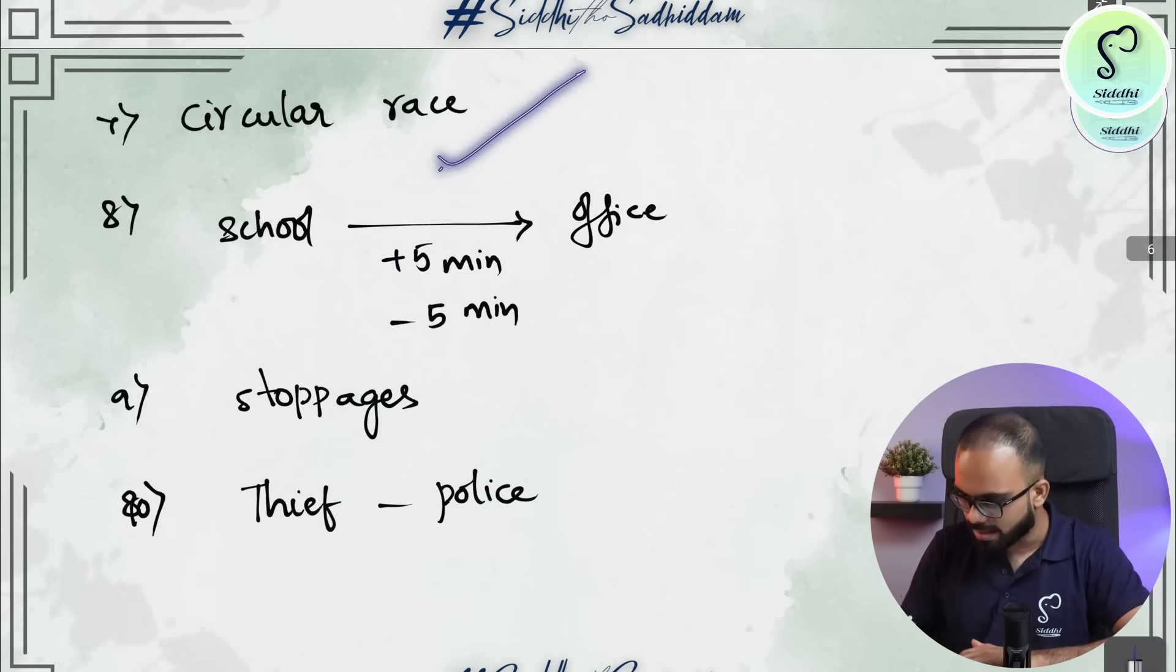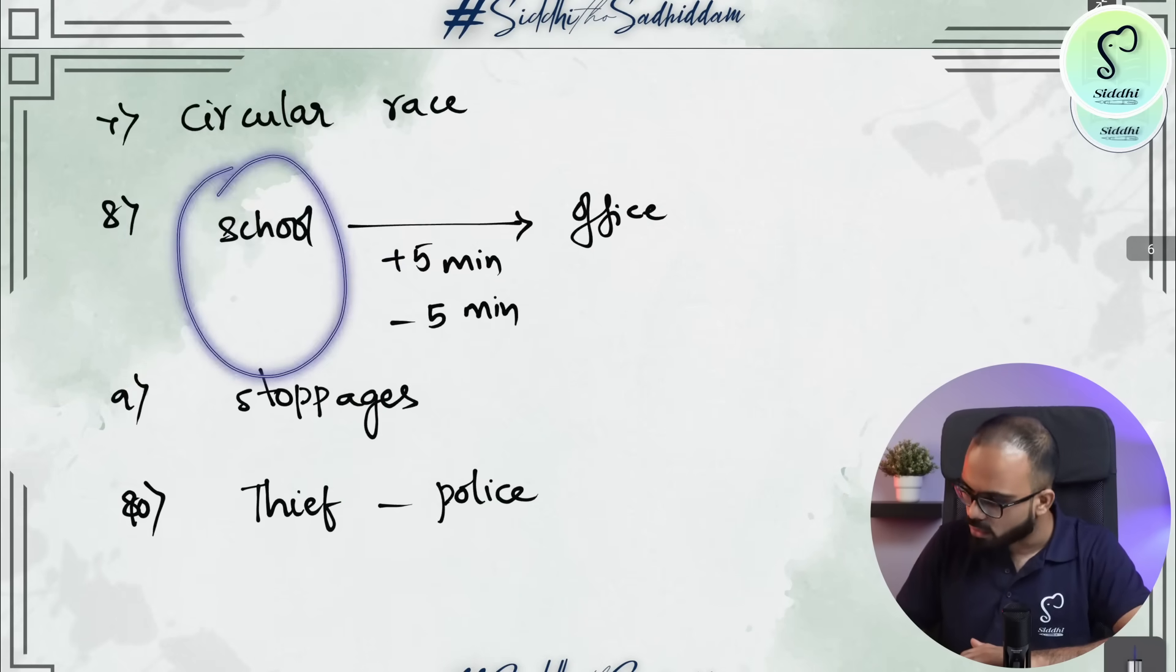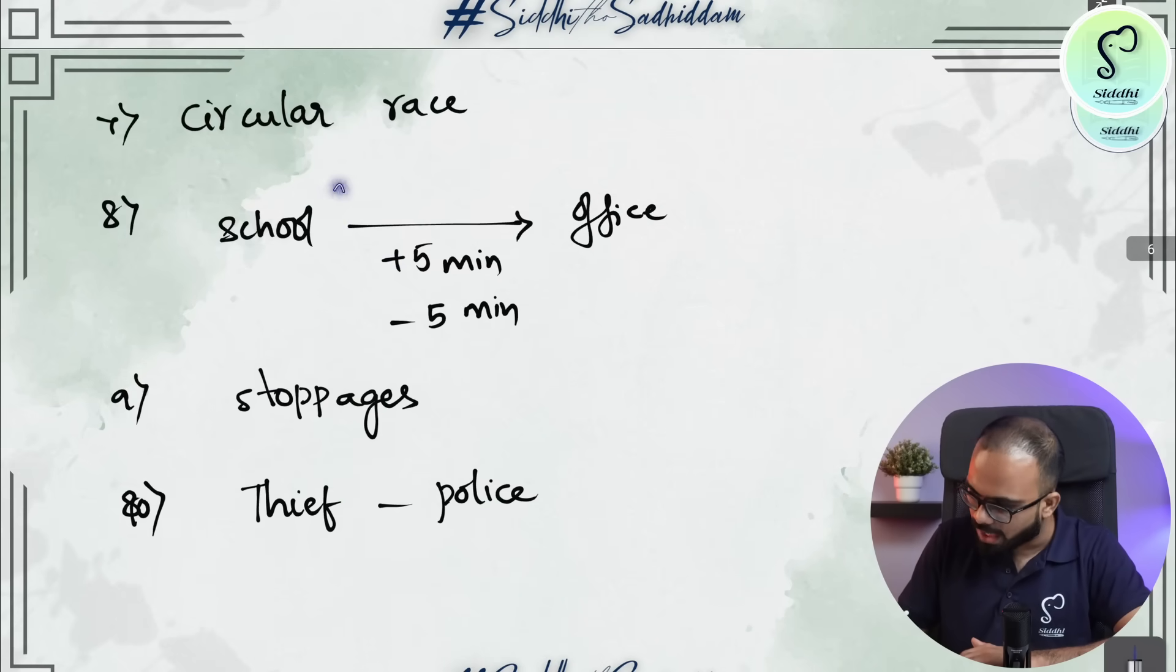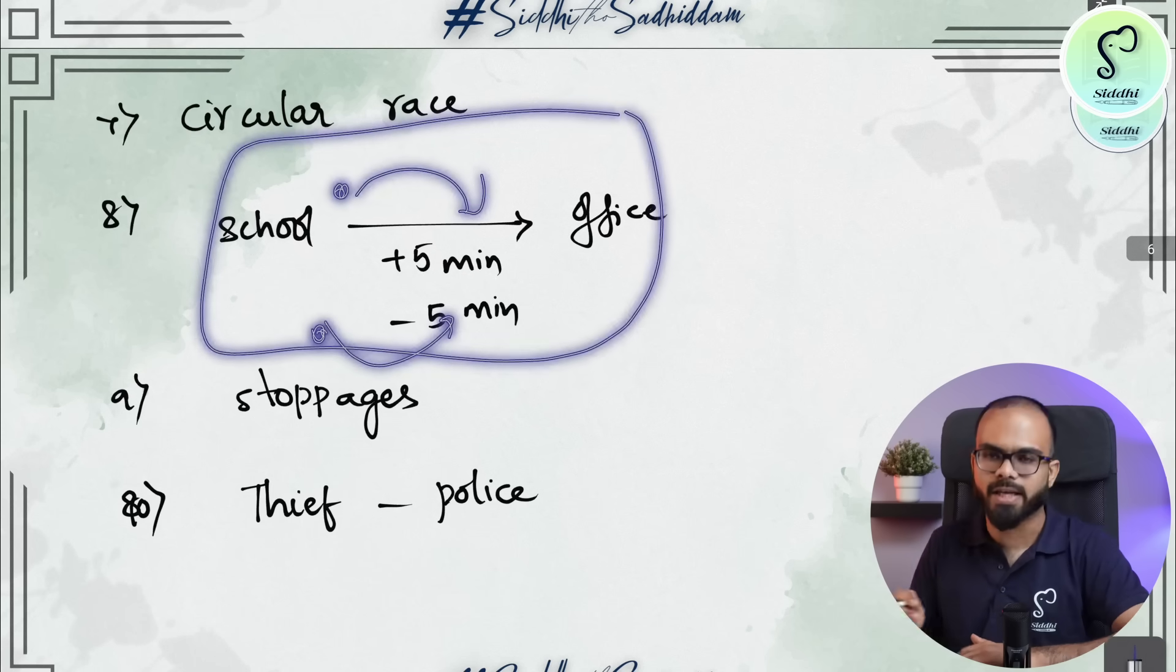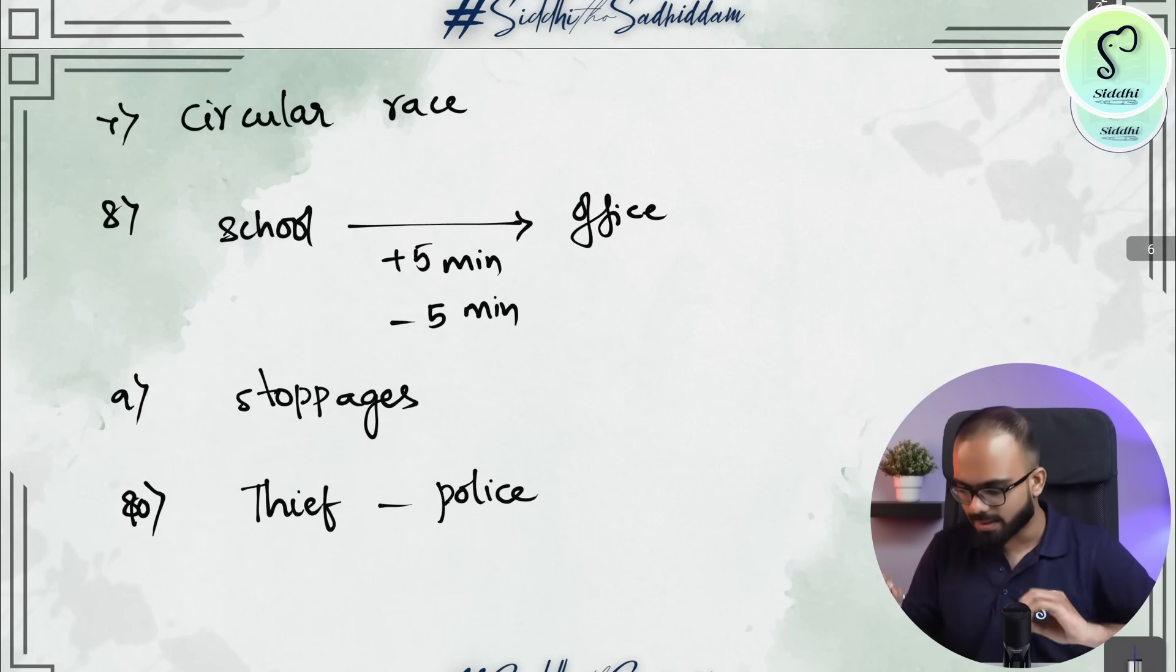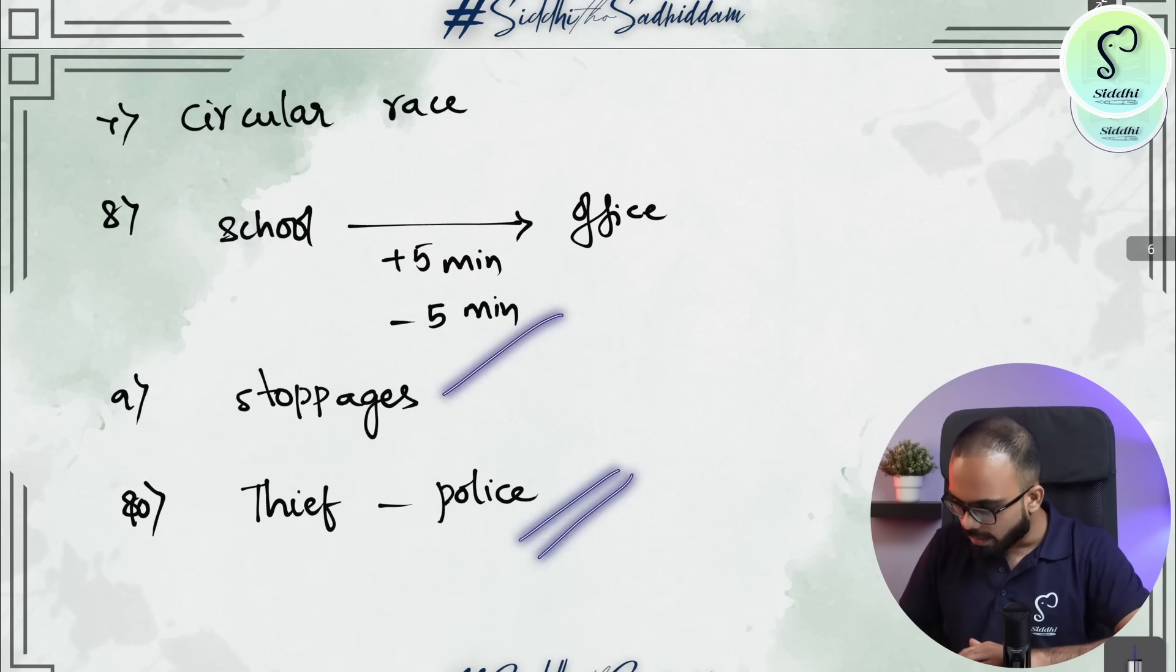Then circular races. Then there is a school and there is office. If you start at a particular time, you will be 5 minutes early. You will be starting at a particular time, you are 5 minutes late. These kind of questions where they will ask you what is the distance. Stoppages, thief and police questions.